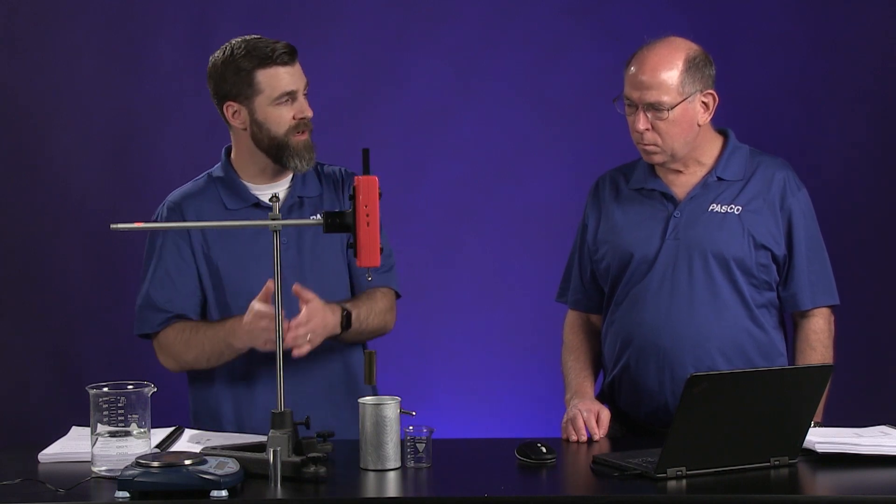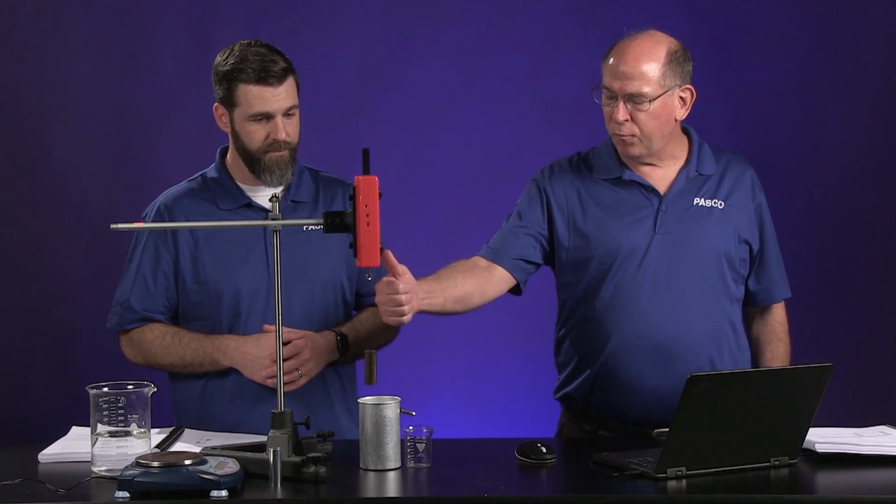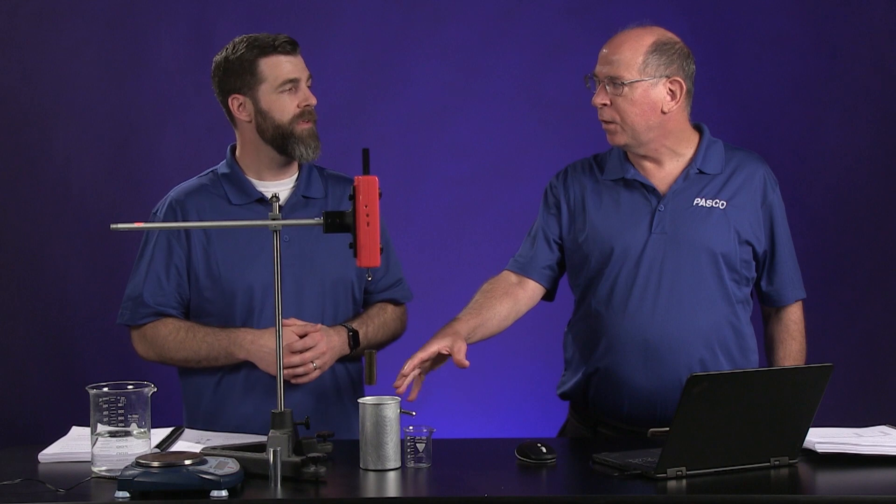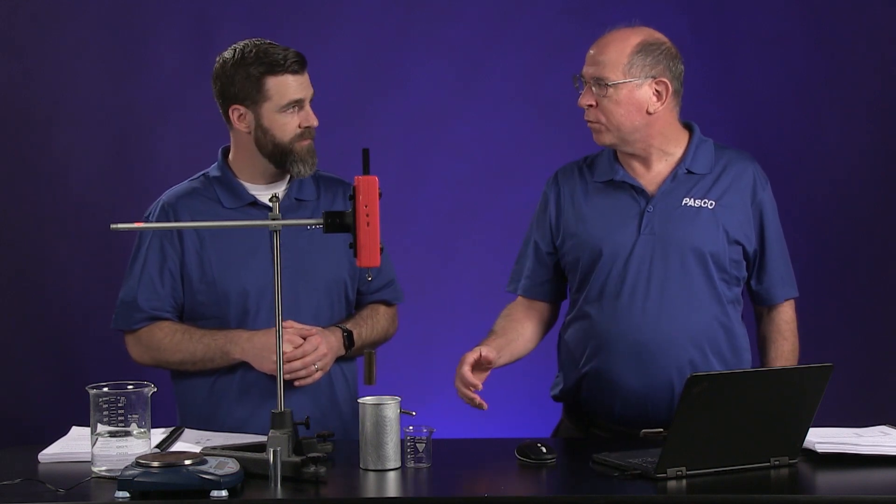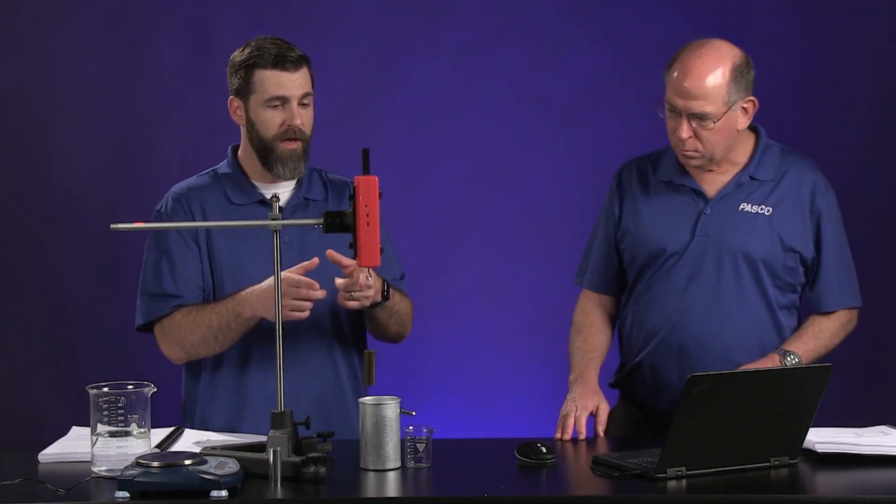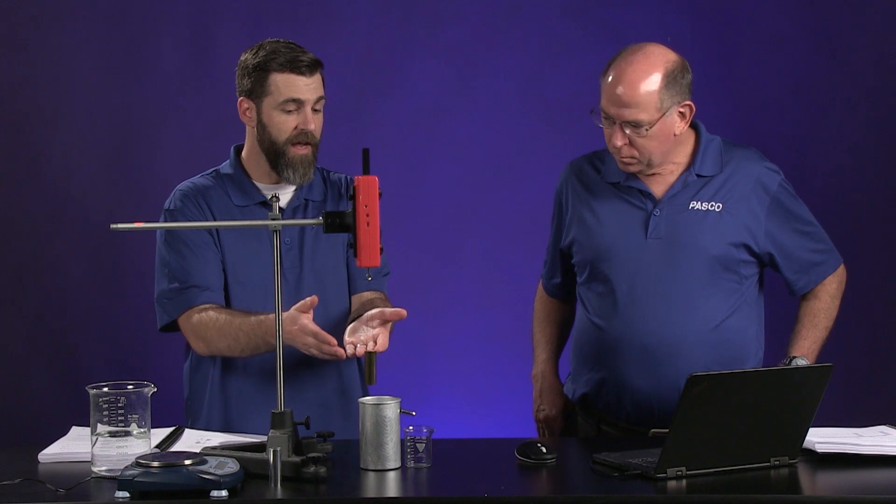Then we're going to use that to calculate the weight of the water. So the upward force of tension is going to go down as we submerge it, and the amount it goes down is the buoyant force? That's right. Right now the force sensor is measuring the tension, and that tension is due to the weight of this brass cylinder.